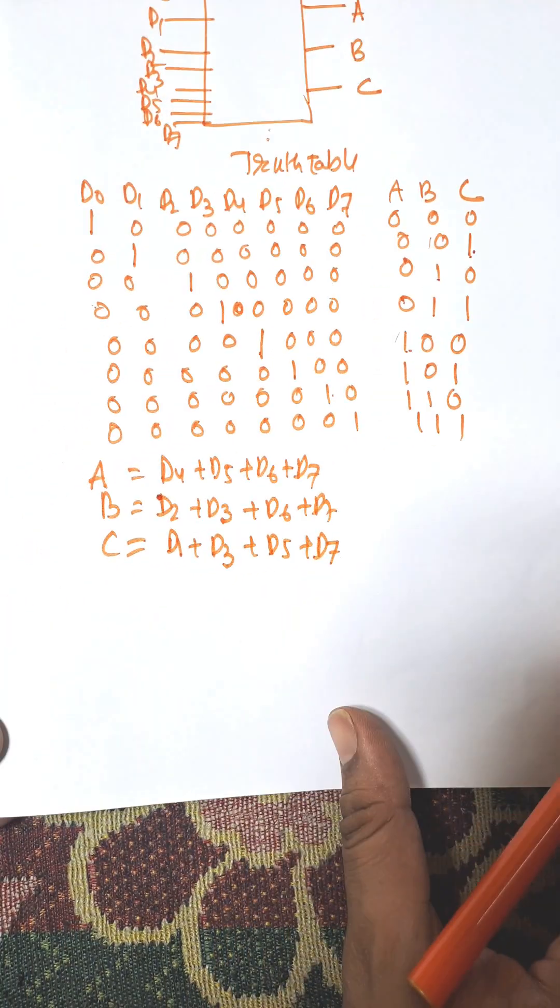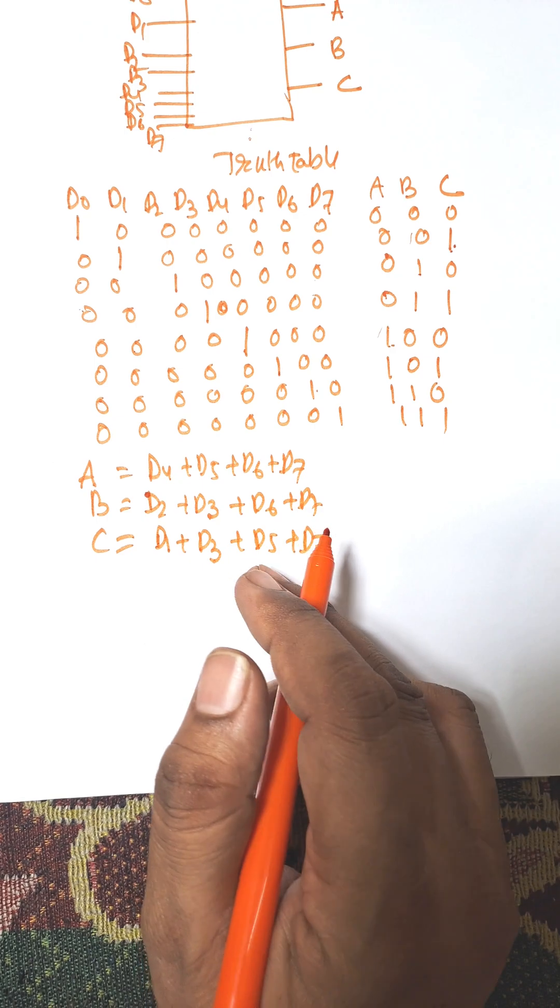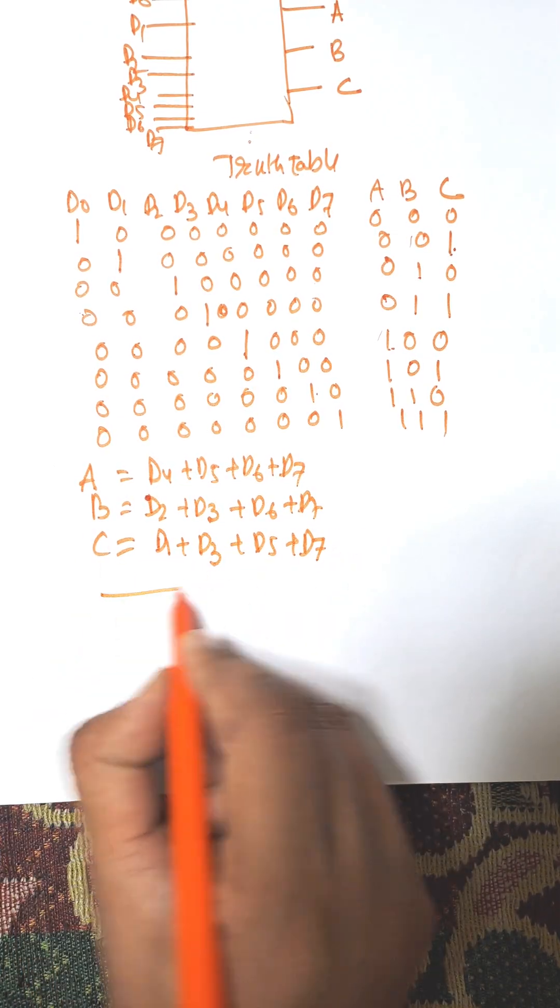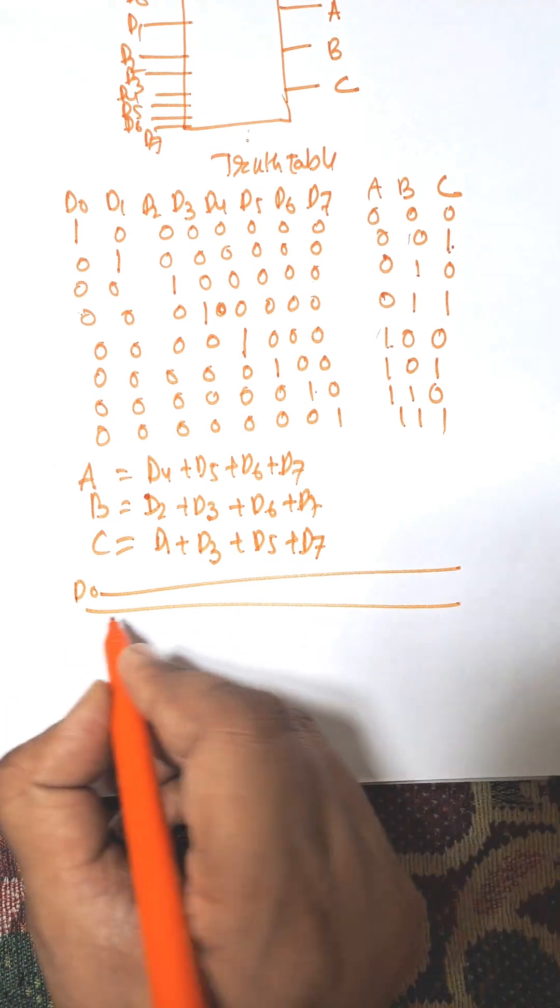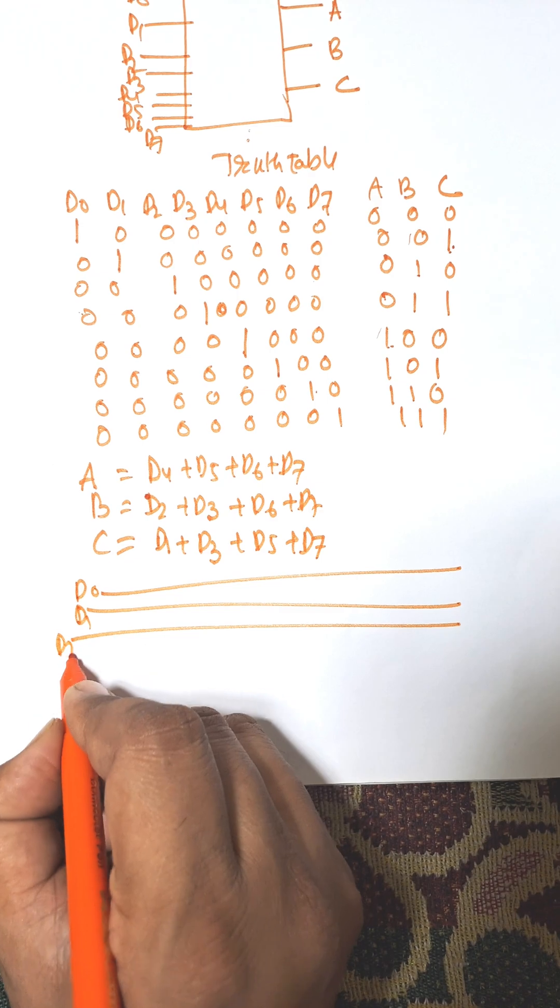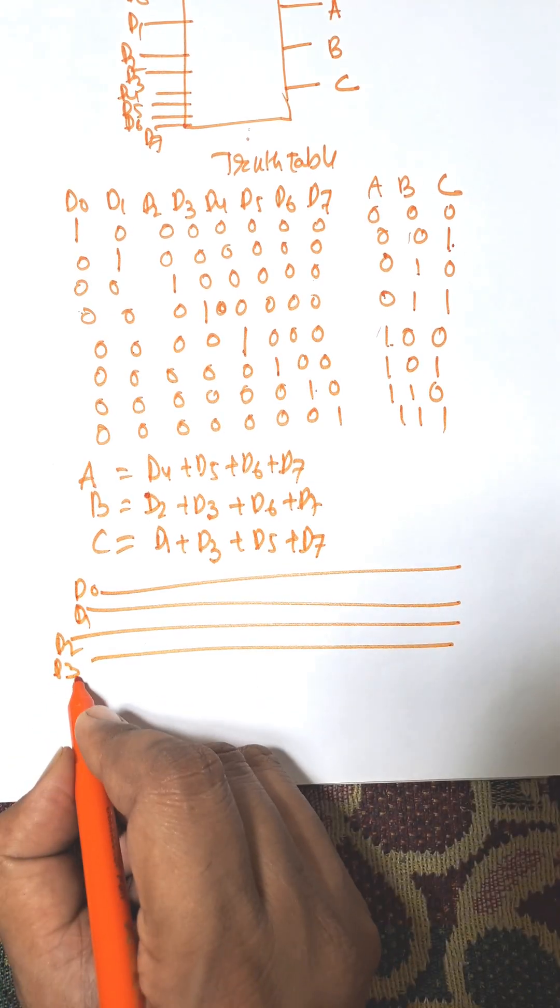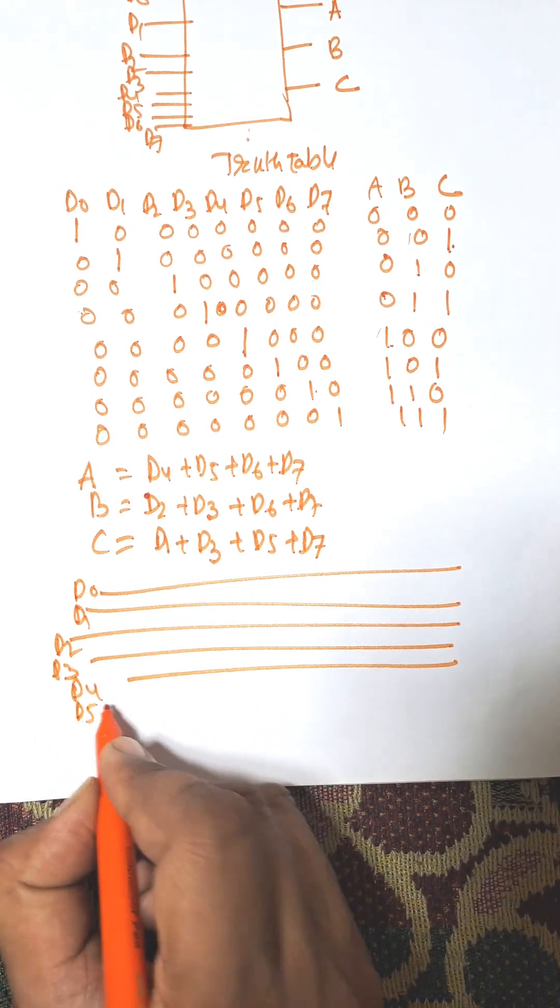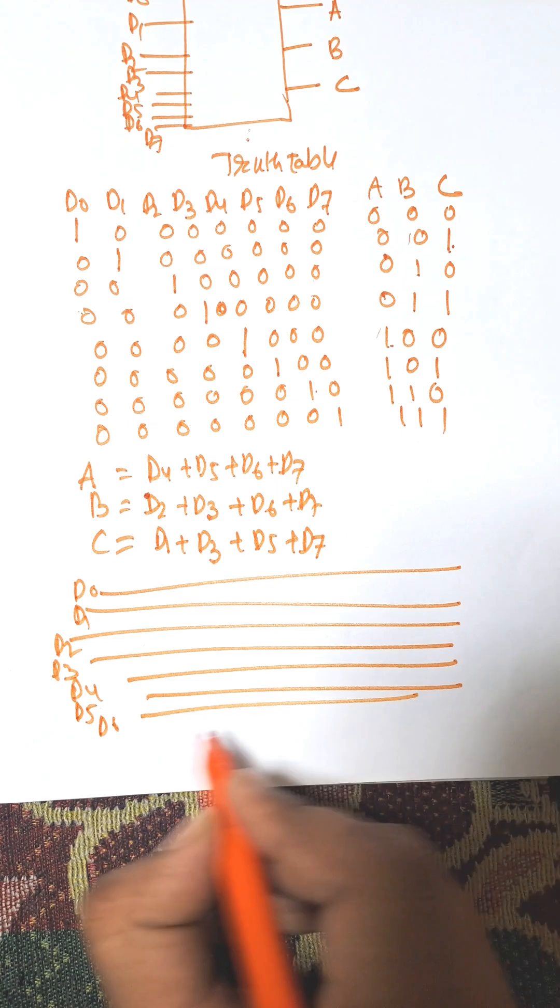Now we need to construct the circuit diagram for the octal-to-binary encoder. These are the inputs: d0, d1, d2, d3, d4, d5, d6, and d7.